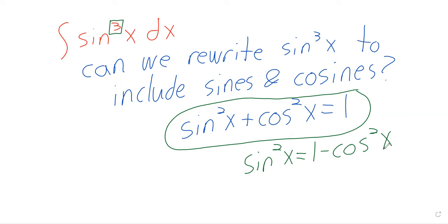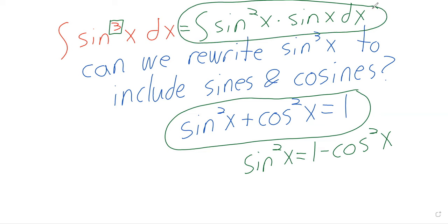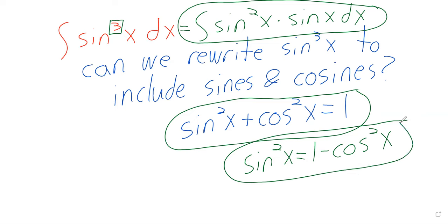After we finish this example I'll talk about when we can use it. The cube is a square times the first — sine cubed is just sine squared times sine. We're going to use this trick of rewriting that power together with the Pythagorean identity to find this integral.